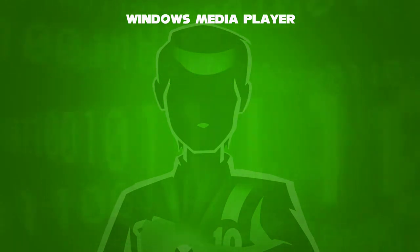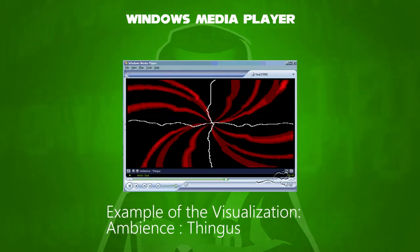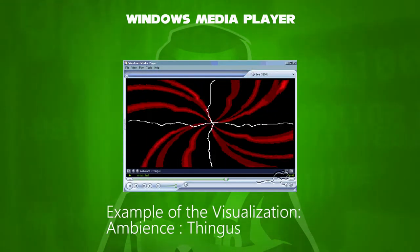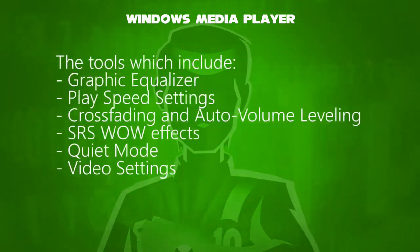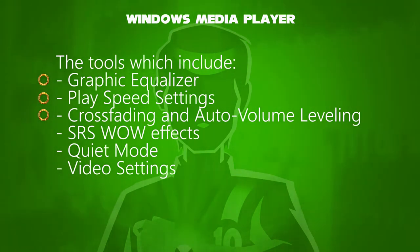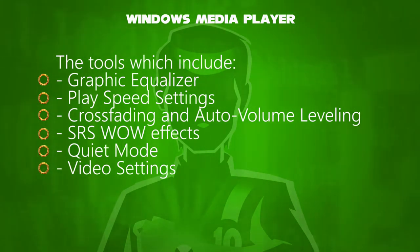Windows Media Player uses the following features. In the visual screen, we see an audio visualization when the song is played via audio file type. The tools include Graphic Equalizer, Play Speed Settings, Cross Fading and Auto Volume Leveling, S.R.S. Wow Effects, Quiet Mode, and Video Settings. These are called its enhancements.